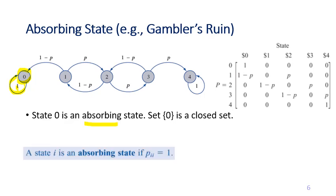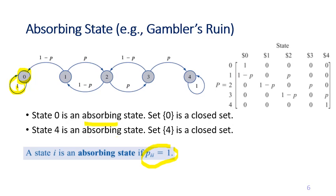Formally, an absorbing state is defined as a state where p_ii equals 1 — the probability of transitioning from state i back to state i is 1. In this gambler's ruin example, state 0 is an absorbing state and state 4 is also an absorbing state. The set containing only node 0 is a closed set, and similarly the set containing only node 4 is also a closed set.